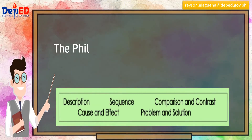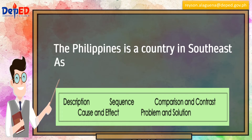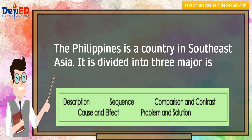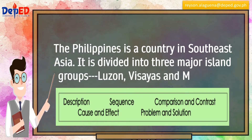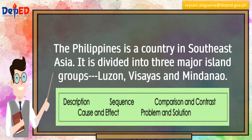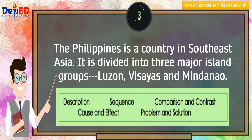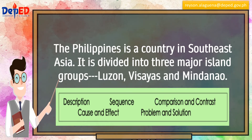The Philippines is a country in Southeast Asia. It is divided into three major island groups: Luzon, Visayas, and Mindanao. This is a description.